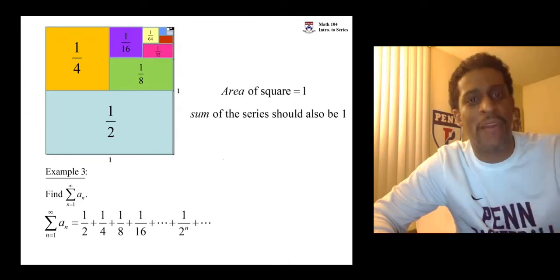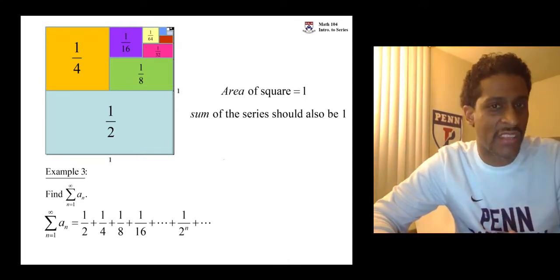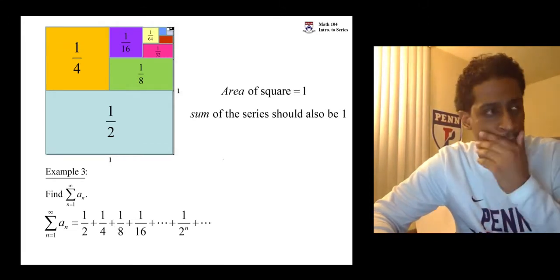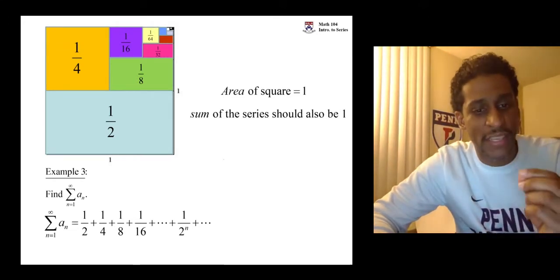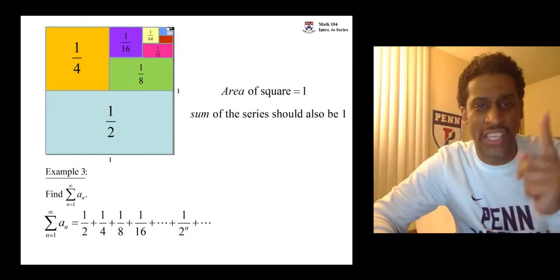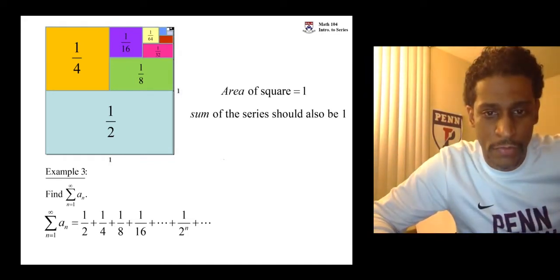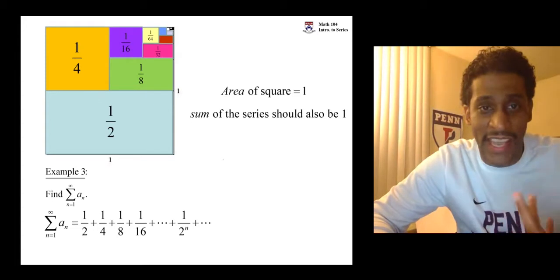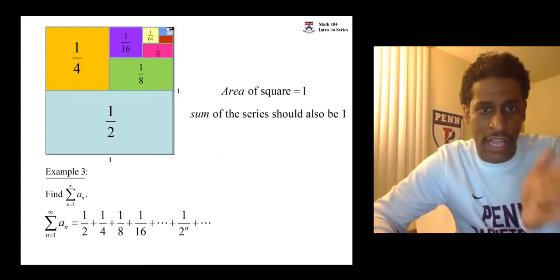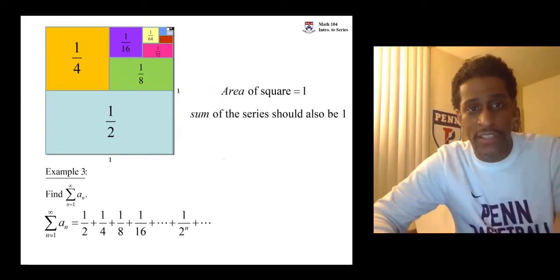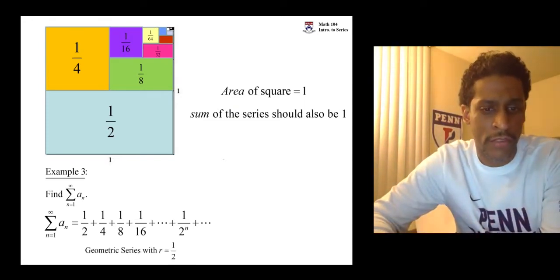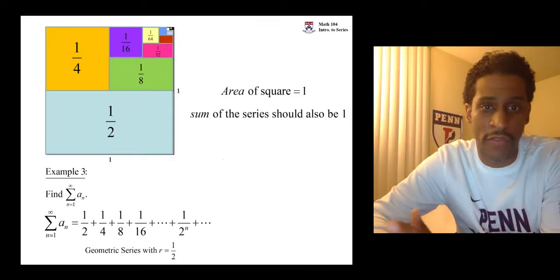So one half plus one fourth plus one eighth plus one sixteenth, on and on forever — generically the term is one over two to the n. If we add this up forever we should get one. How do we know for sure? We represent this as a geometric series. The common ratio to get from term to term is one half — you're multiplying by one half to get from term to term. It's a geometric series with a ratio of one half.